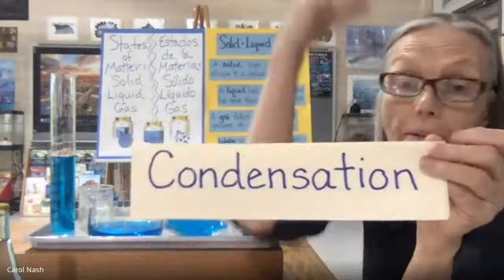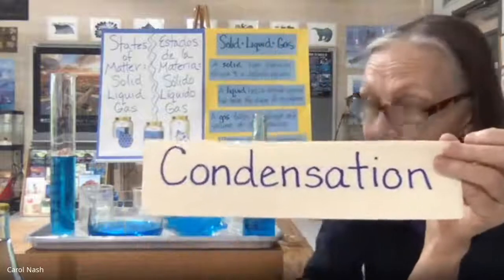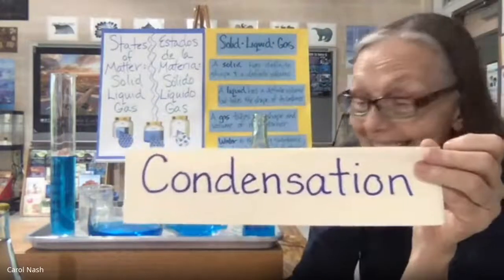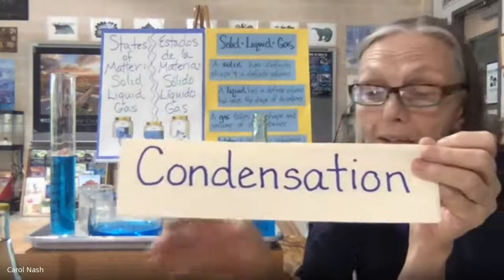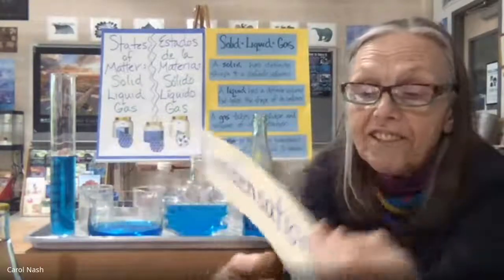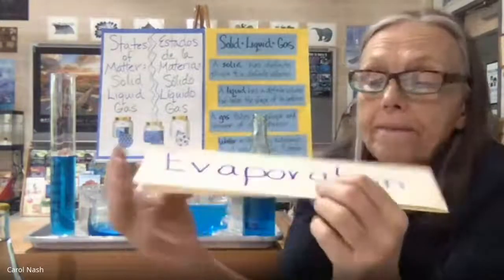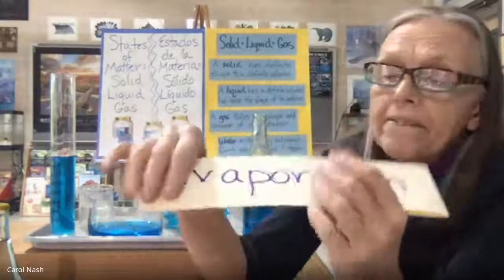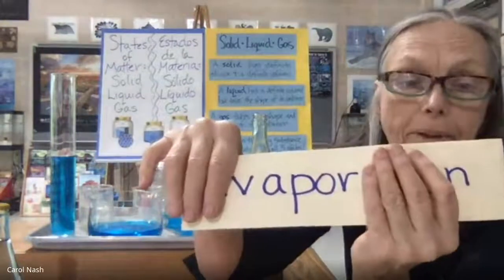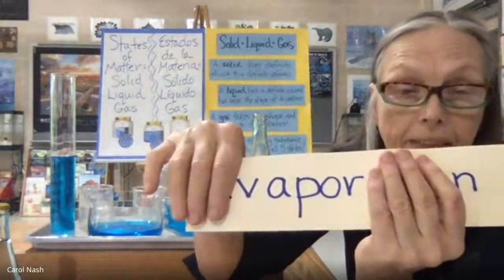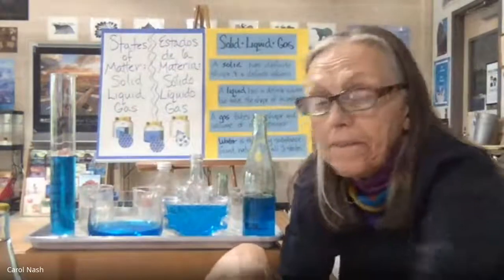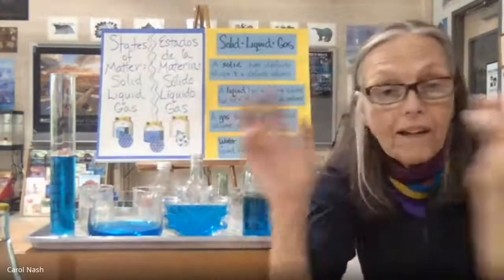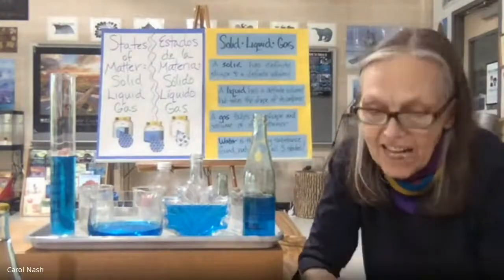Water vapor in the air gets cold and hits the outside of the bowl, and then it condenses. Evaporation — that word has 'vapor' inside it, meaning a gas. So water will evaporate, it will condense, it will freeze — you're just moving through those three states.